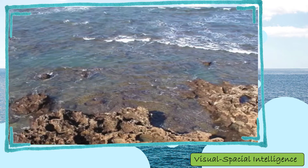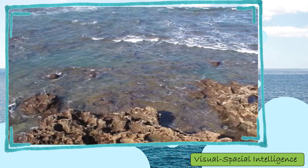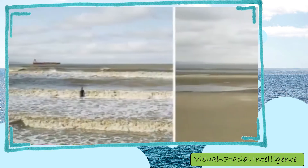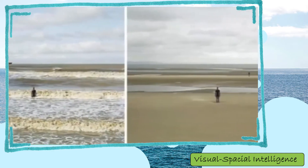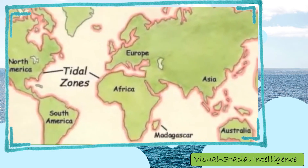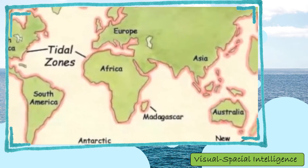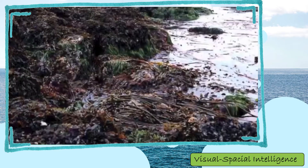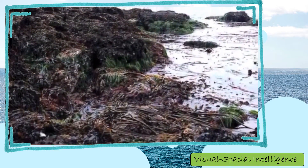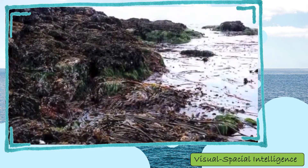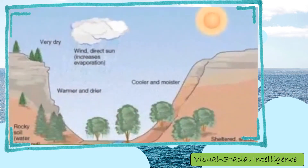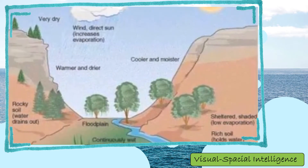Welcome to the intertidal zones. The intertidal zones are the area between high and low tide. This area is exposed to air at low tide and submerged in water at high tide. The intertidal zones are located all over the world at every ocean coast. The supply of water is intermittent due to rising and falling tides. As the tide goes out, tide pools and shallow areas become vulnerable. There is high humidity and generally high precipitation.